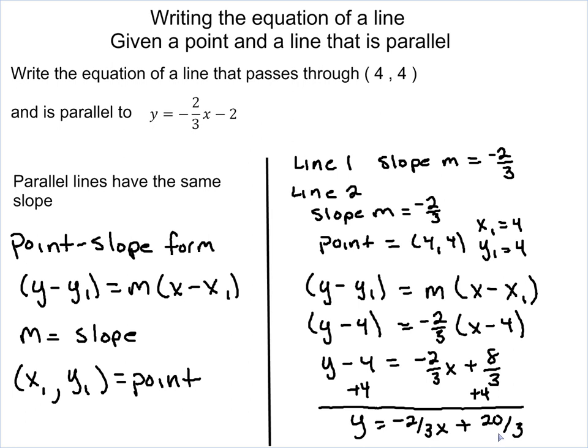So that's how you find the line if it's parallel to it, because the slopes are the same. If you notice, the slope here is negative 2/3, and the slope in my original problem is negative 2/3. So those two lines are going to be parallel because the slopes are equal.